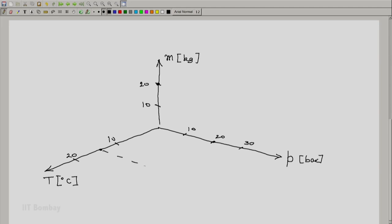Using these three coordinates, we can now locate our point in three-dimensional space. Create a rectangular parallelepiped. Our point is somewhere here. This point represents pressure of 20 bar, mass of 20 kilograms, and temperature of 14 degrees Celsius.